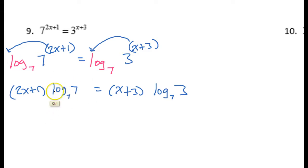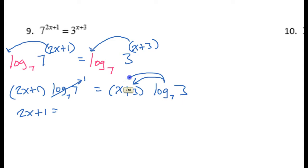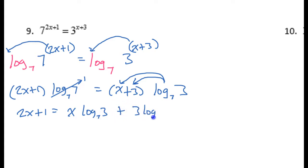Now, the log base 7 of 7 is 1, so I don't need to write that down. This becomes a 1, which changes nothing. So I will have 2x plus 1 equals. Over here, I need to take the log base 7 of 3 and do the distributive property with it. So that's going to give me x times the log base 7 of 3 plus 3 times the log base 7 of 3.